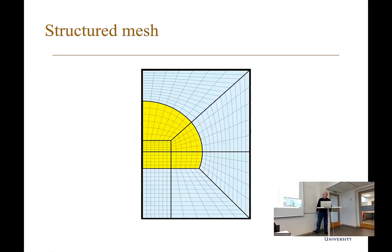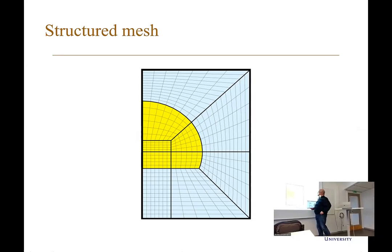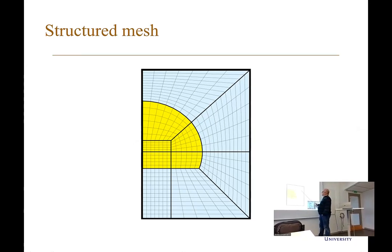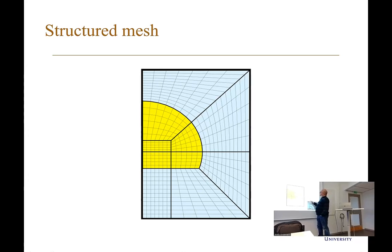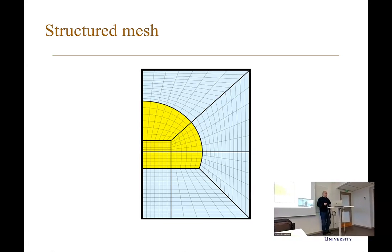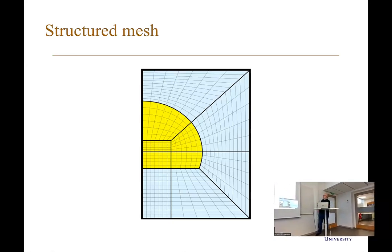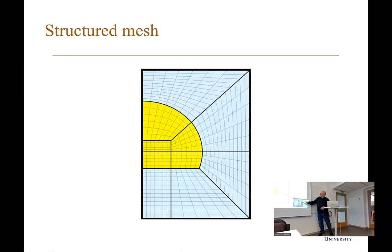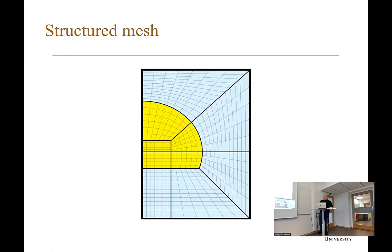Even with a structured mesh you can build quite complicated meshes. This is a tunnel section built with four-sided elements, also called super elements, where each element consists of four curves. You specify the number of elements on each edge, connect them together, and the lines must be connected. Structured elements can be a good way to have detailed control over mesh generation. It's almost like finite elements at a super element level.